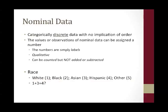For example, race, which is a nominal measure, can be coded as 1 white, 2 black, 3 Asian, 4 Hispanic, and 5 other. If you have a patient reported as 1 white and one reported as 3 Asian, you can't add them up in a meaningful way because you'll get a 4 Hispanic, which makes no sense.